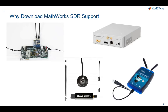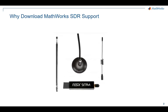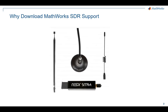But before we talk about how, let's talk about why. What can you do with MathWorks SDR and some inexpensive hardware? The best way to illustrate is by example. Here you see a picture of an RTL-SDR radio along with a few antennas that can be used with it. The entire bundle costs less than 30 US dollars and has the capability to receive signals from 24 MHz to nearly 1.8 GHz.